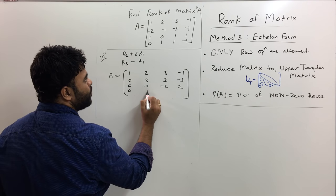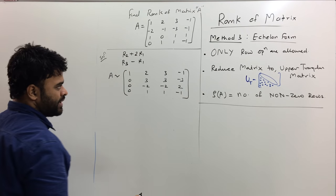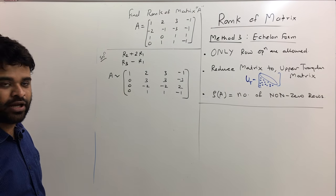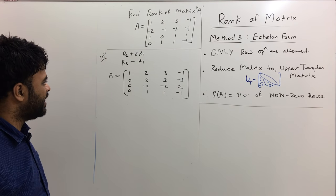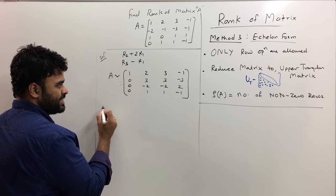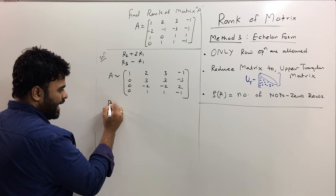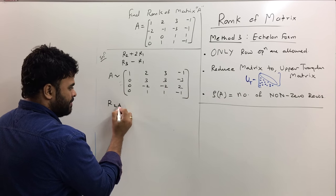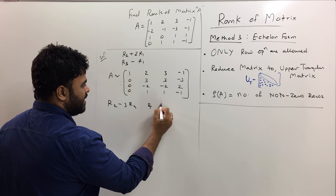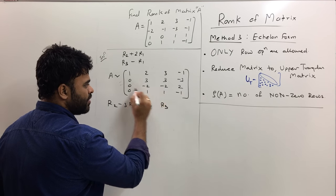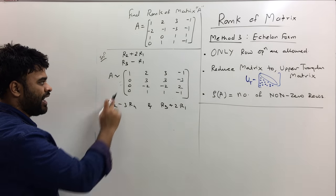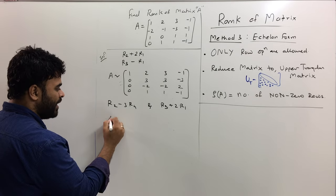My target here is to reduce that matrix A to an upper triangular matrix. What I can do is make these two zero. I will do R2, the second row, minus 3 times R4 the fourth row, and R3 the third row plus 2 times R1, and then they both will become zero. The R2 and R3 both rows will become zero.